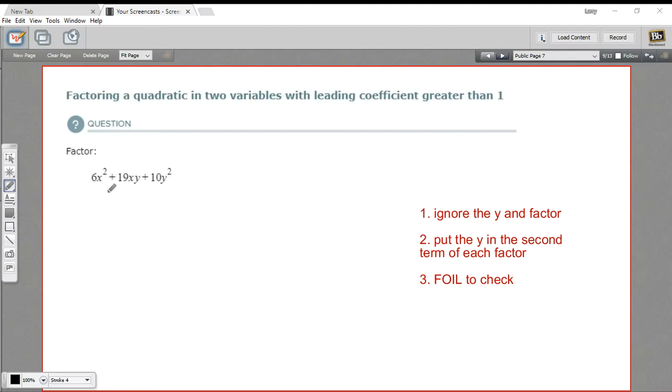We are factoring a quadratic in two variables. So you can see we have an x squared term, we have a y squared term, and we have an xy term in the middle. Sometimes I think of this as two quadratic equations. One you read this way, one you read this way.